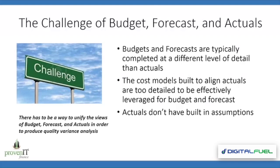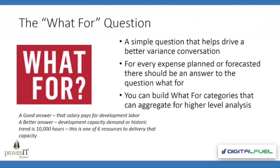The challenge of budgeting, forecasting, and actuals: budgets and forecasts are typically completed at a different level of detail than actuals. When we create a budget and a forecast, we do not have within those creations the level of detail that we typically see coming through actuals — we're not planning at the per-salary line or the invoice level. We go in and build cost models around how we want to see our actuals aligned going forward. Actuals also don't come built with inherent assumptions in them; somebody has to go in and add those assumptions. So there has to be a way to unify the views between budgeting, forecasts, and actuals in order to produce quality variance analysis.